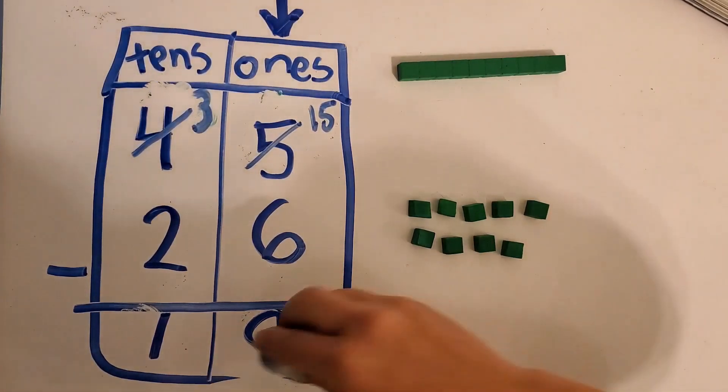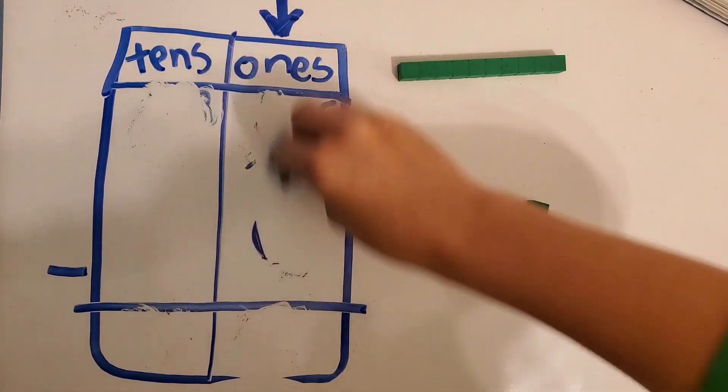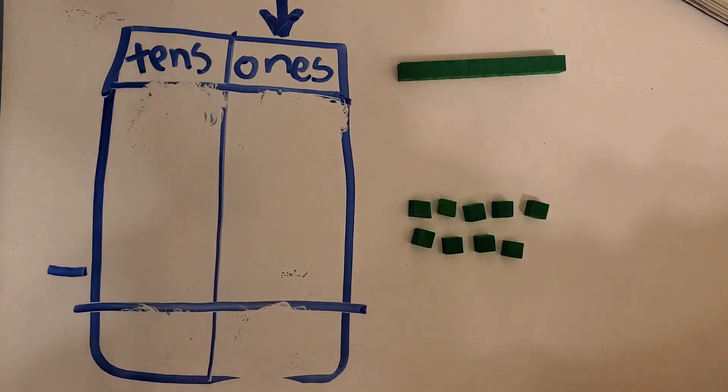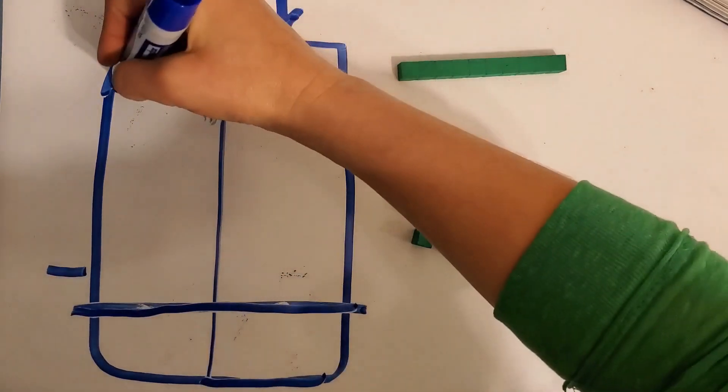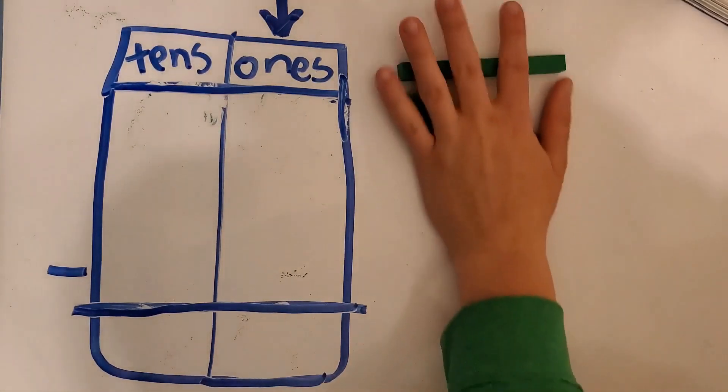Let's do just one more. Make sure we got this down. And then you can move on to your worksheet. Let me just fix these lines because they are looking so messy. Last one.